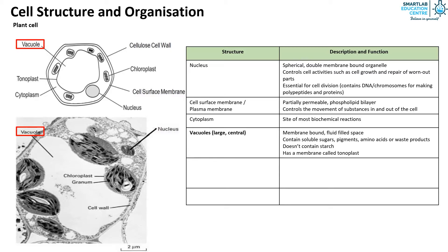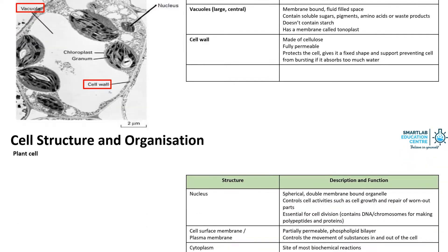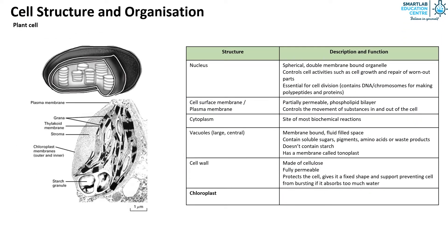Plant cells have cell walls which are made of cellulose and are fully permeable. They protect the cell, give it a fixed shape and support which prevents the cell from bursting if it absorbs too much water. Finally we have the chloroplast. It is a tiny disc-like structure and contains chlorophyll which is the site of photosynthesis.